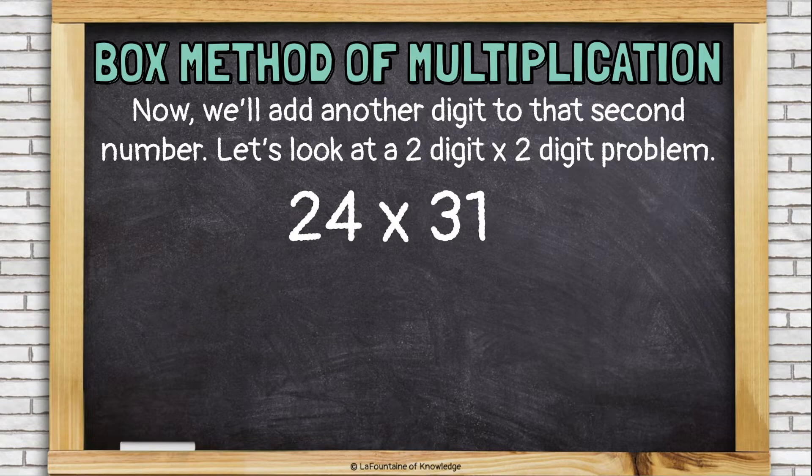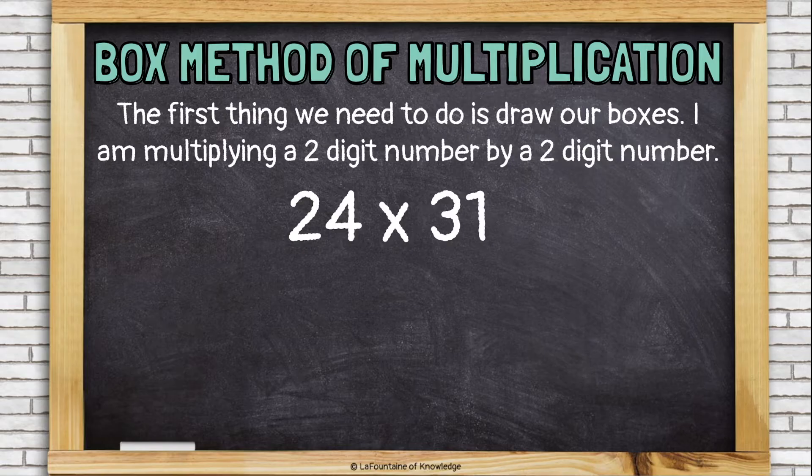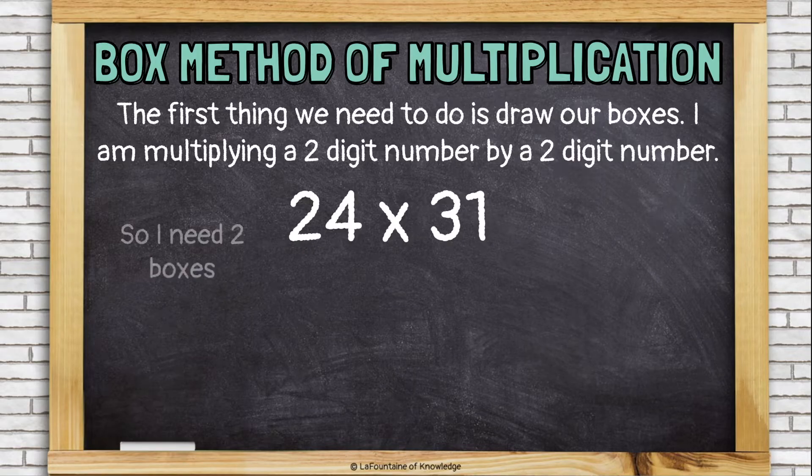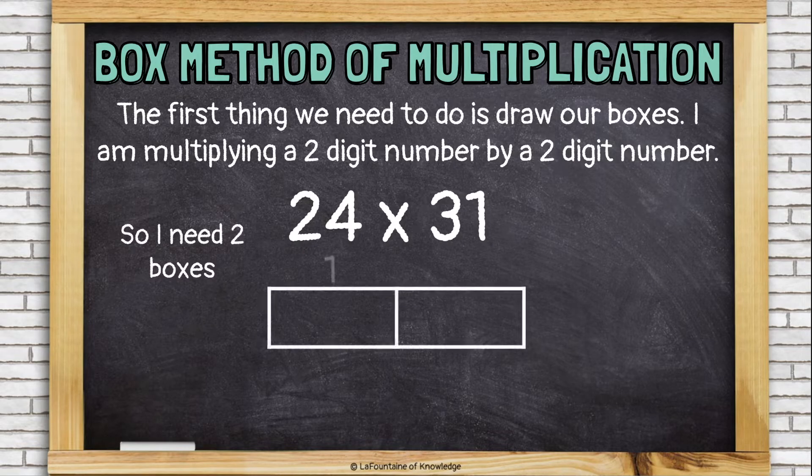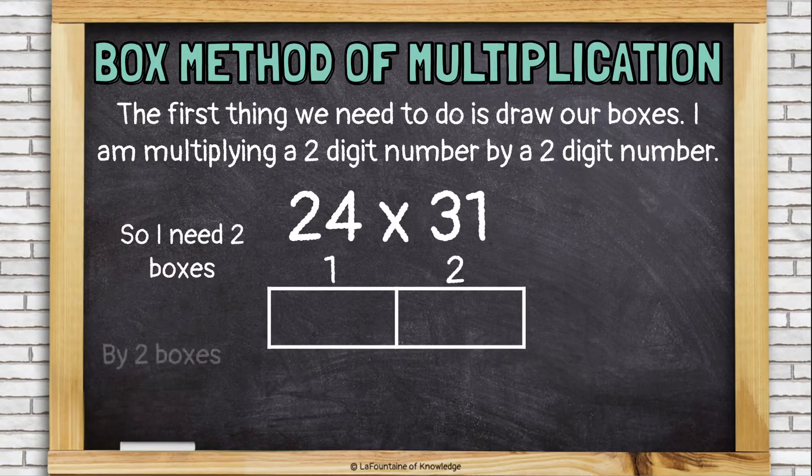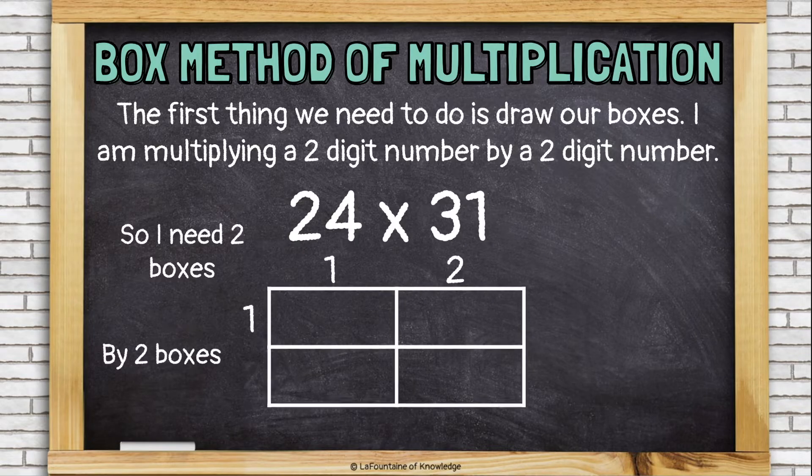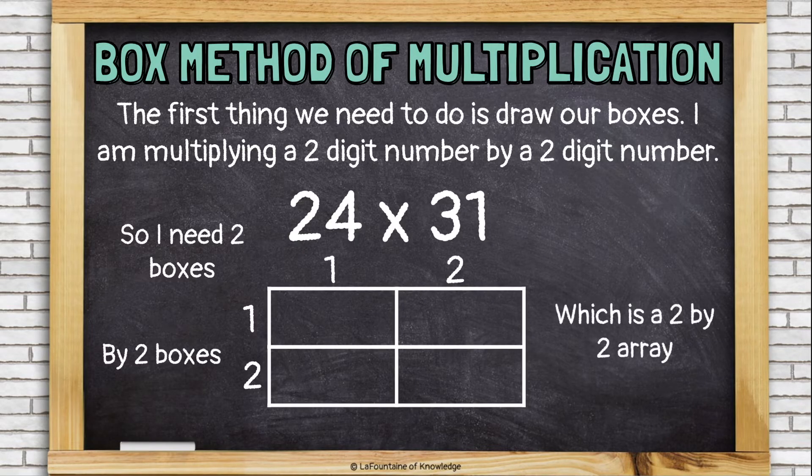Now, let's look at a two-digit times two-digit problem, 24 times 31. First thing we need to do is draw the boxes. This time, I'm multiplying a two-digit number by a two-digit number. I need to draw two boxes by two boxes. This is a 2 by 2 array.